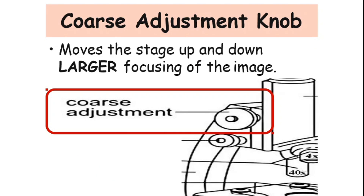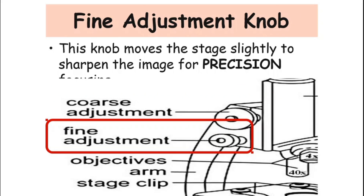Next is the coarse adjustment knob. The coarse adjustment knob allows us to move the stage up and down for larger focusing of the image. It is used to adjust the distance of the sample on the stage. Next is the fine adjustment knob. The fine adjustment knob is the smaller round knob on the side of the microscope. It is used to fine-tune the focus of the specimen after adjusting the distance of the stage to the lens using the coarse adjustment knob.